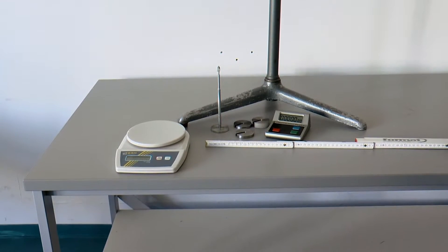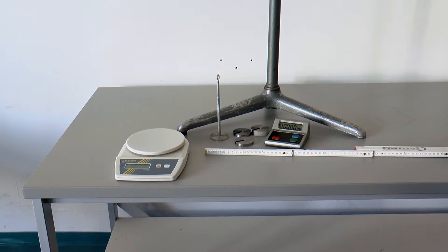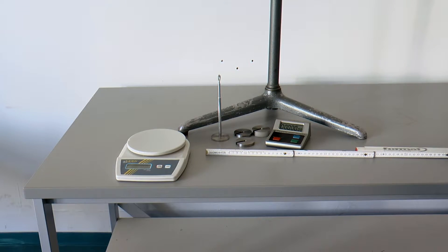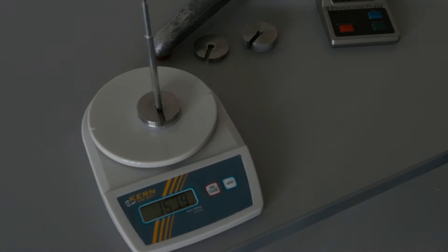You will need a spring that can be suspended, several weights, a scale, a length scale and a stopwatch. First, we measure the mass of all weights and the spring with a scale.